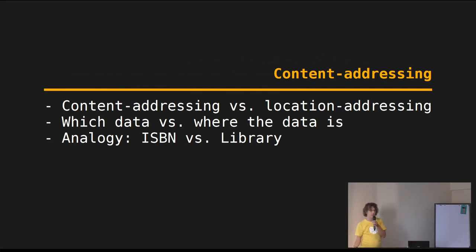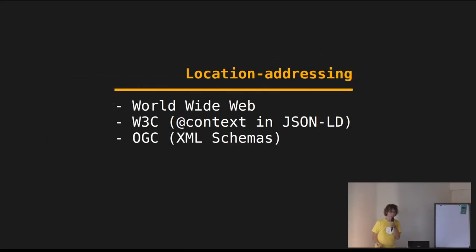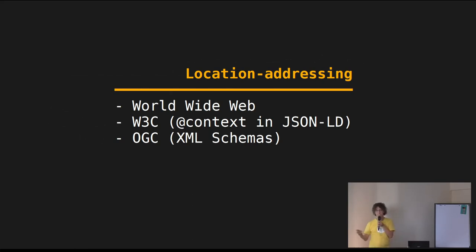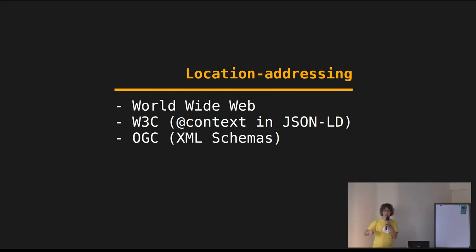In this example you can see that content addressable systems totally make sense. But the reality is we are so used to location address systems. The world wide web is a location address system, and there you have exactly the same problems — a website might be gone or might have changed since the last visit and you can't tell. Even in more modern standards like JSON-LD, the context element points to a schema at a URL, which is still a location. Even in that working group there were discussions about making it content addressable, but they just don't really want content addressable systems in the web.